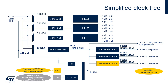The AHB clock, called HCLK, is derived by dividing the system clock by a programmable prescaler. The APB clocks, called PCLK1, PCLK2, and PCLK3, are generated by dividing the AHB clock by programmable prescalers. The RTC clock is generated by the low-speed external 32768 kHz oscillator, the low-speed internal 32 kHz RC oscillator, or the HSE divided by 32. This selection cannot be modified without resetting the backup domain.